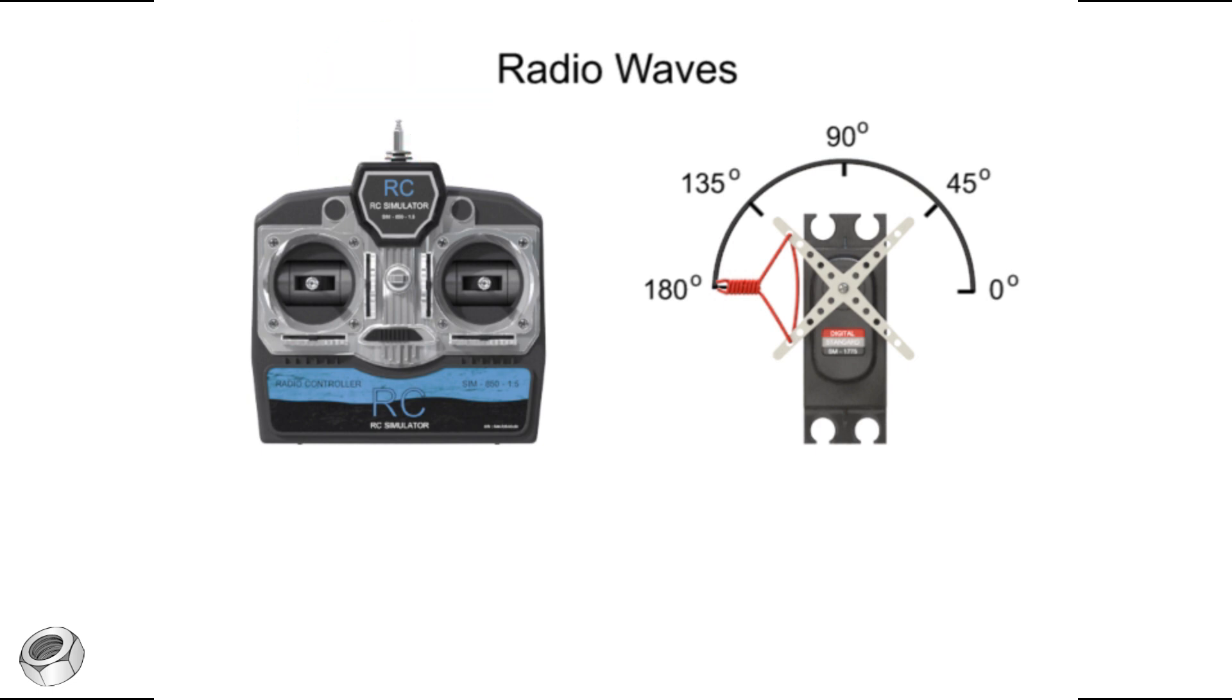The servo expects to receive a converted digital pulse roughly every 20 milliseconds. This train of pulses instructs the servo motor to hold its position. It is the pulse duration repeating at regular intervals that tells the servo where to turn.